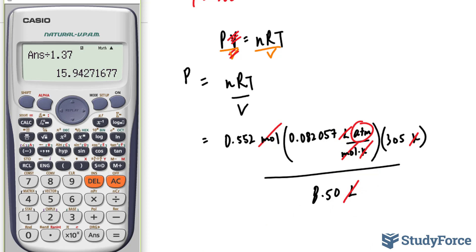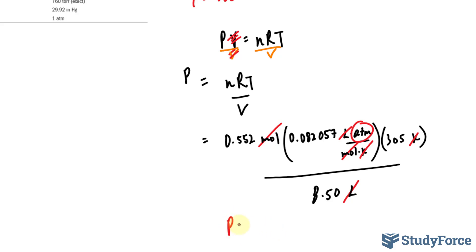Let's use our calculator. 0.552 times our gas constant, 82057, times 305, divided by 8.50. This gives us the answer of 1.62. P is equal to 1.625.